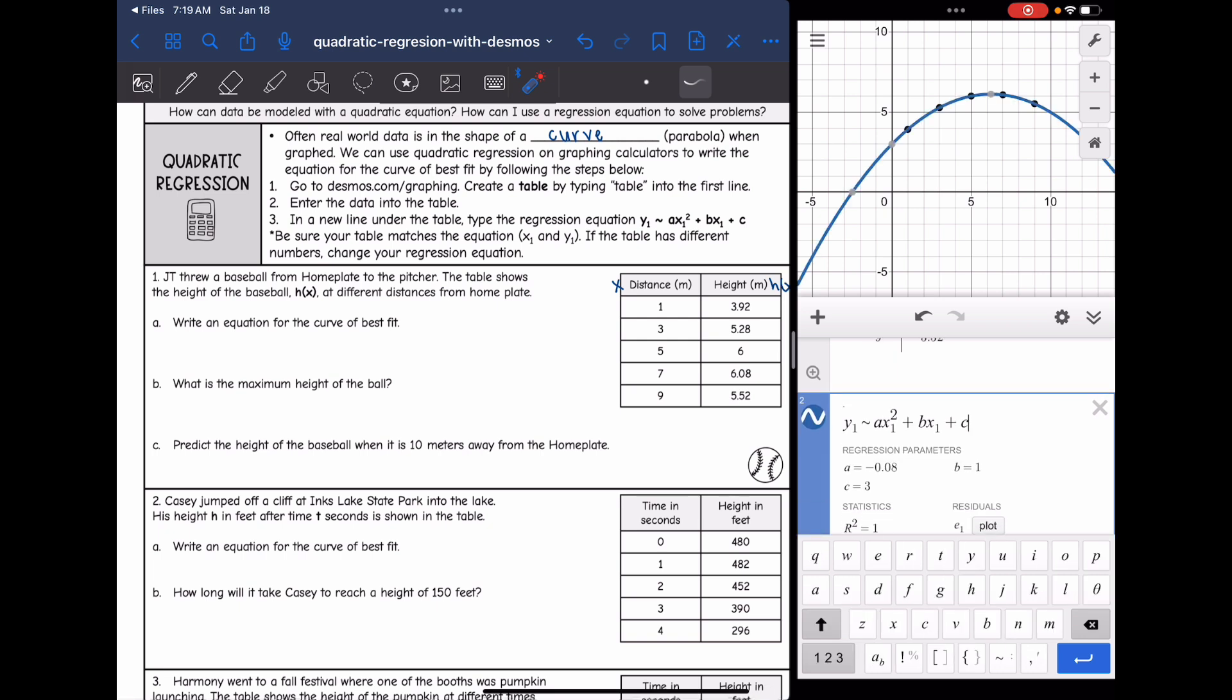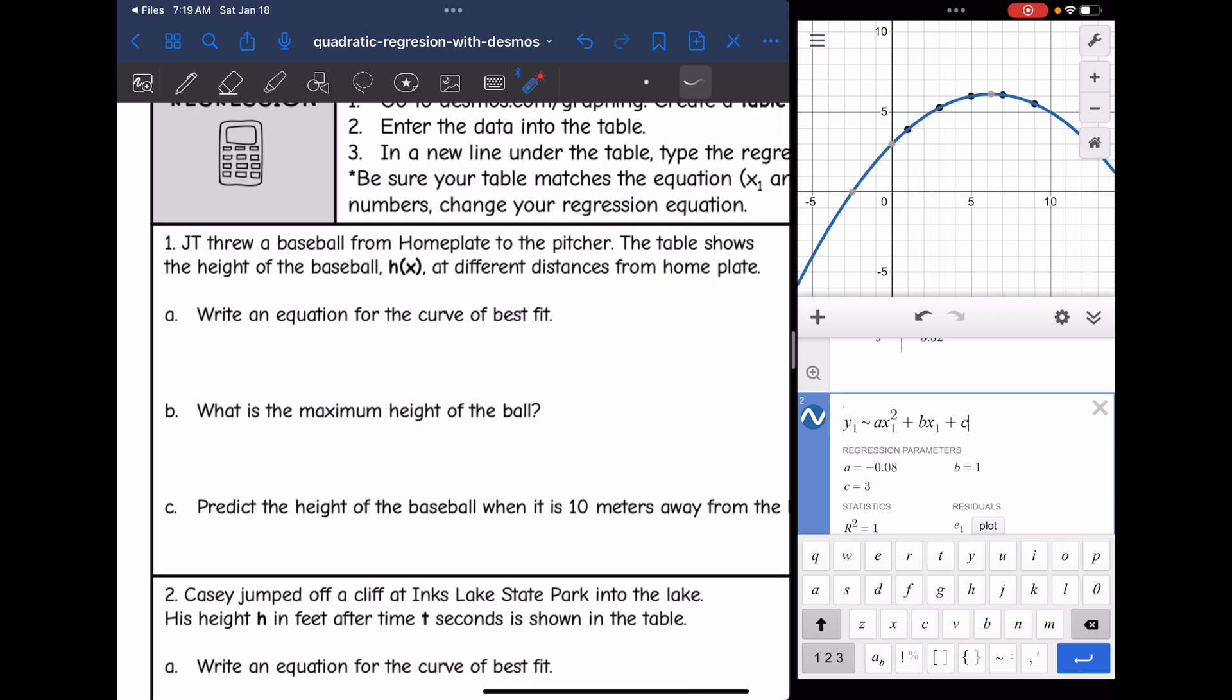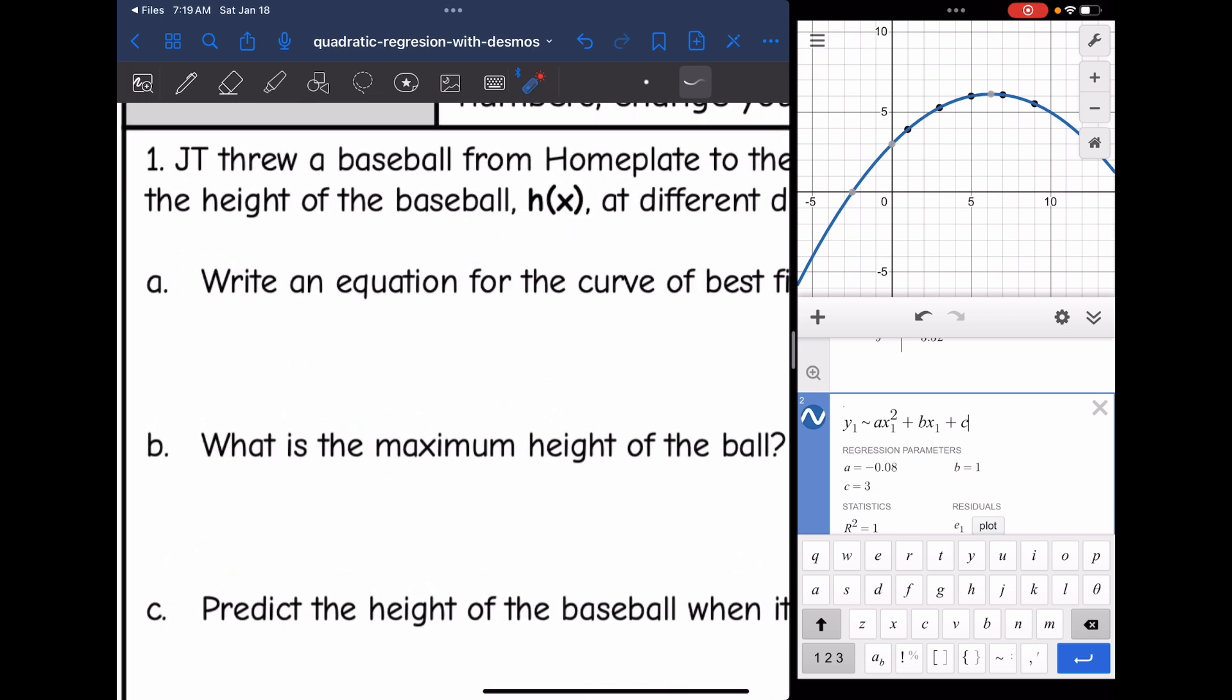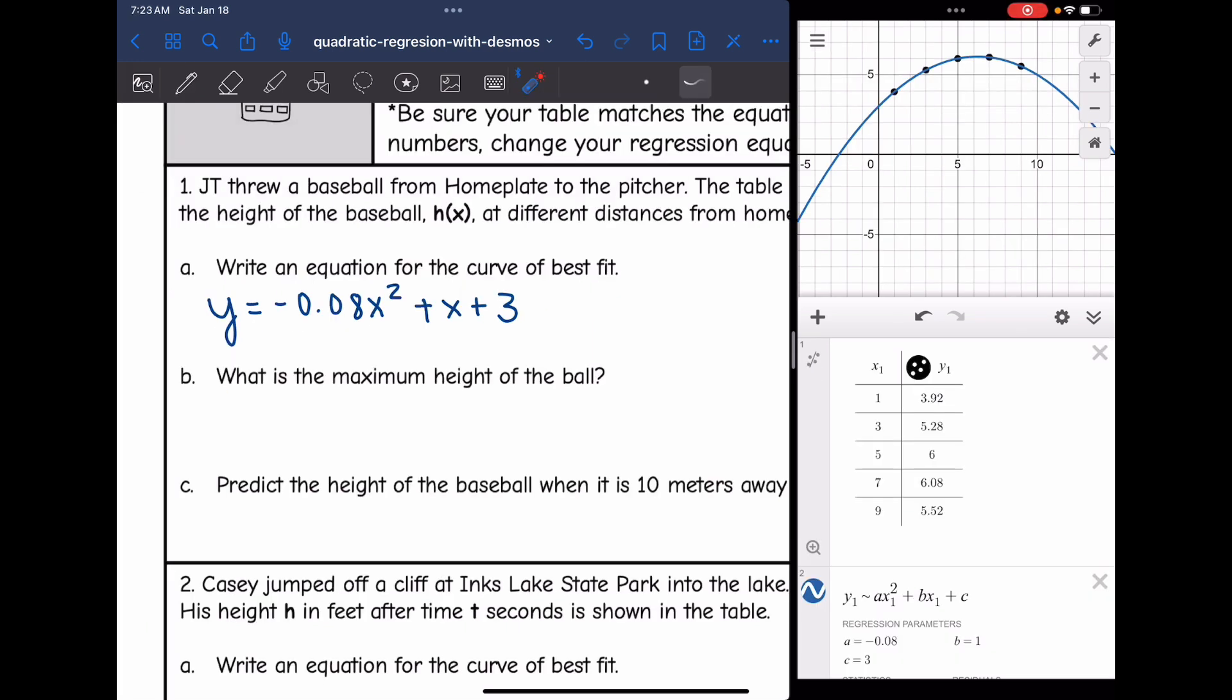So I'm going to do y1 is about a times x1 squared plus b times x1 plus c. And there Desmos gives me my a, b, and c values. So I can write my equation, my quadratic equation for the curve of best fit. It'll be y equals negative 0.08x squared plus b is 1, so that'll just be x, and then plus c is 3.